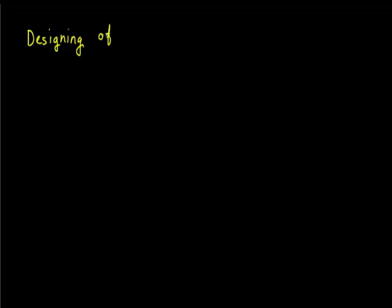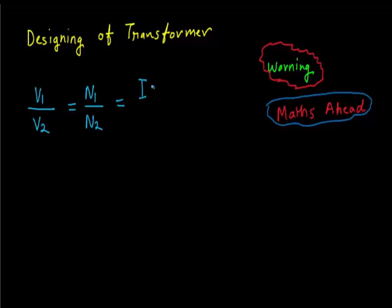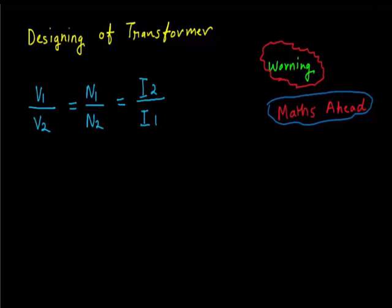Now let's start with the design of the transformer. It will use some mathematics but don't worry, the maths is not hard here. It will use simple formulas like you have learned in class 12 or so, that is V1 by V2 is equal to N1 by N2 is equal to I2 by I1. This is the basic formula that will be used in the designing of a transformer.